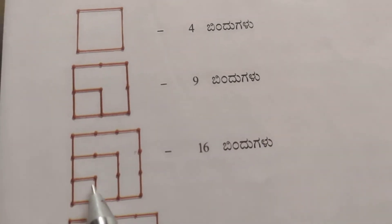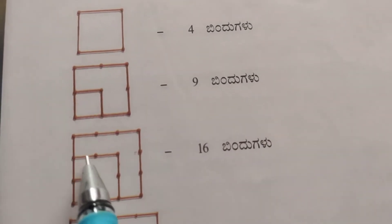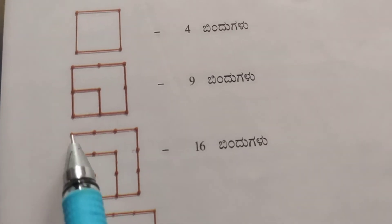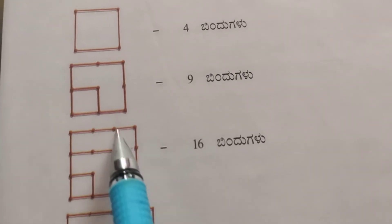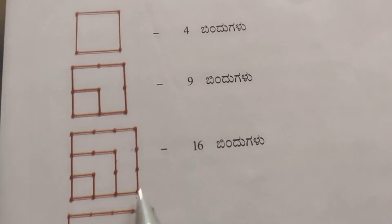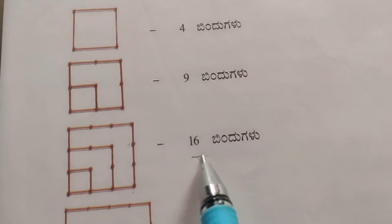Counting the third figure: 1 through 16 — sixteen dots.